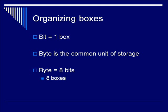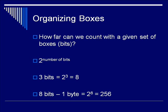Now you understand binary — let's add a little more formal terminology. Each of the boxes we were talking about is called a bit. Commonly, we string eight bits together, and that's called a byte. So how far can we count with a given set of bits? The easy way to calculate this is two to the power of the number of bits. With three bits, that's two to the power of three, or eight — and since we start counting at zero, we count from zero to seven. With one byte — eight bits — that's two to the power of eight, or 256.